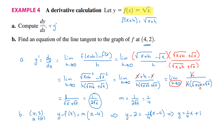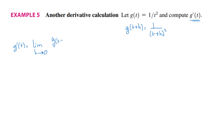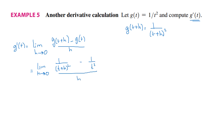Now let's move to the next example. g of t is equal to 1 over t squared. So g of t plus h will be 1 over t plus h squared. Finding the derivative g prime of t, I will go back to our definition: the limit as h goes to 0 of g of t plus h minus g of t divided by h. That gives the limit as h goes to 0 of 1 over t plus h squared minus 1 over t squared, divided by h. Let's make a common denominator.